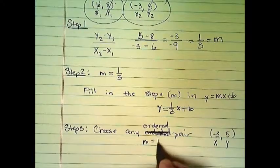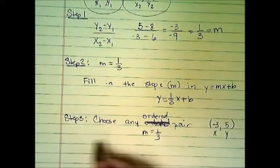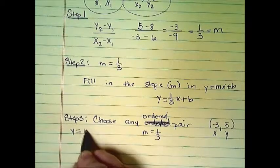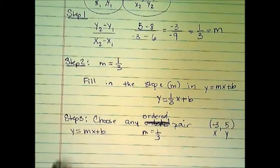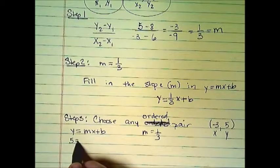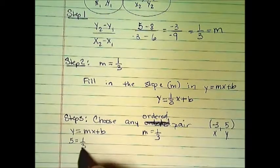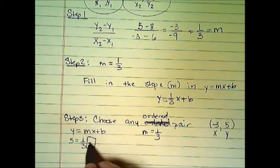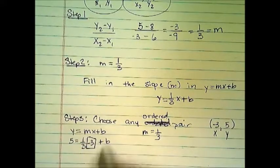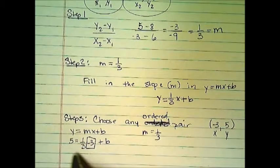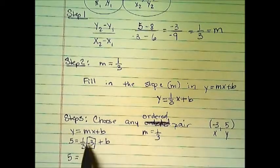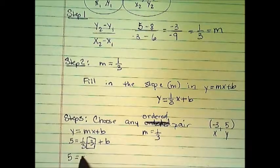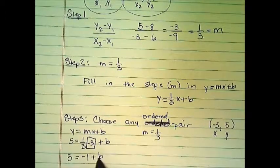m is still 1 third. We're going to plug all that in right here. So y equals mx plus b. So it's going to say 5 equals 1 third times negative 3 plus b. So 5 equals, when I do 1 third times negative 3, I get negative 1 plus b.